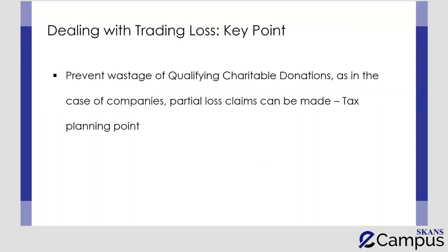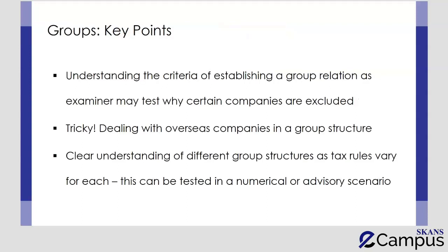Students need to develop a good grip on tackling trading loss issues so they avoid wasting qualifying charitable donation when adjusting trading losses. In the case of companies, when a loss is going to be adjusted against 75% group members, there is an option to make a partial adjustment, which can be effectively utilized to prevent the wastage of qualifying charitable donation. That is the most important planning point when deciding how a loss is to be treated. You also need to understand the criteria relevant to establishing a group relationship, as the examiner might test why certain companies are excluded from a group, and which companies are or are not taken into account.